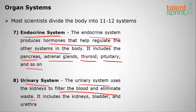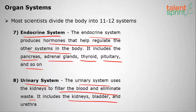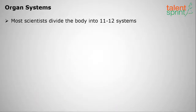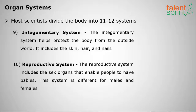The eighth organ system is the urinary system. It uses the kidneys to filter the blood and eliminate waste. The waste is combined with water and ejected through the urethra. It consists of a pair of kidneys, one urinary bladder, and one urethra.